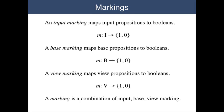An input marking is a function from the input propositions of a propositional net to Boolean values. And a base marking is a function from the base propositions of a propositional net to Boolean values.